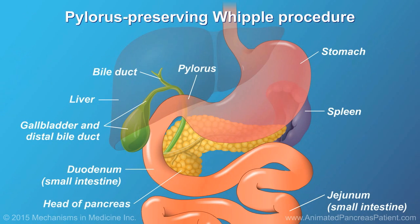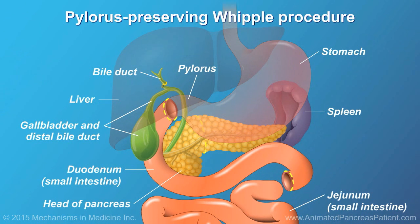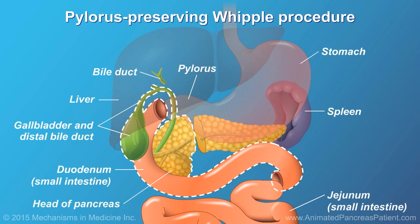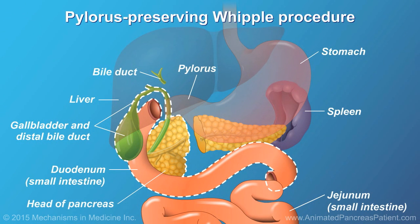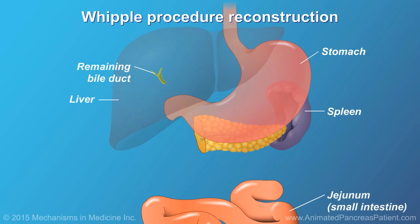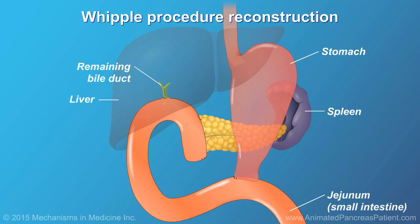In some cases, a pylorus-preserving Whipple procedure may be used, where the stomach is left intact. Both are equally effective. In both variations of the Whipple procedure, the remaining body and tail of the pancreas, the remaining bile duct, and the stomach are reconnected to the small intestine.